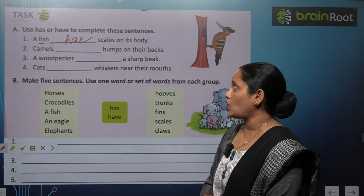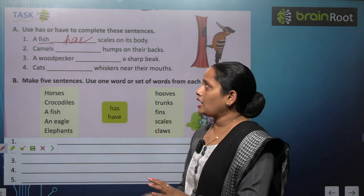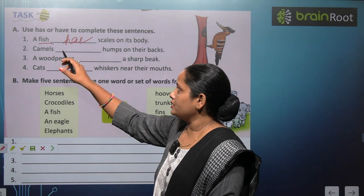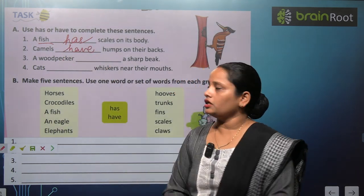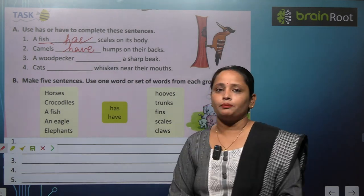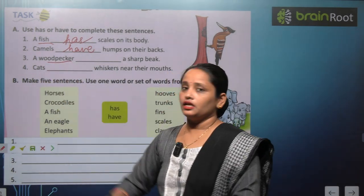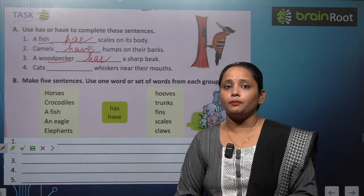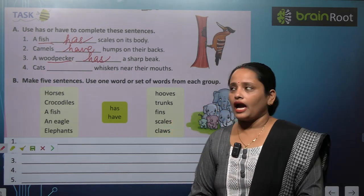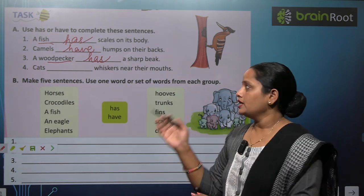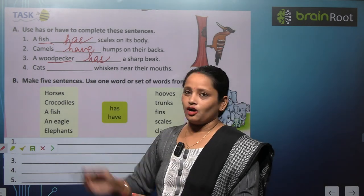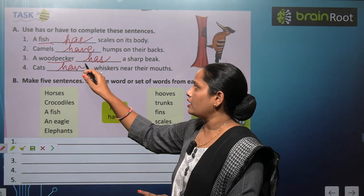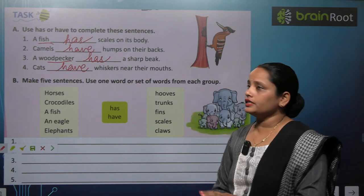A fish has scales on its body. Second one: Camels dash humps on their backs. Kitne camels hain? Many. So camels have humps on their backs. Third one: A woodpecker dash a sharp beak. Kitne woodpeckers? One. So a woodpecker has a sharp beak. Fourth one: Cats dash whiskers near their mouths. How many cats are there? Many cats. So cats have whiskers near their mouths.